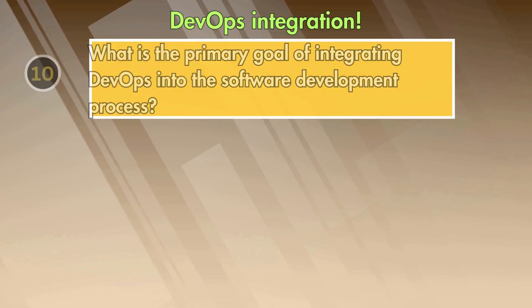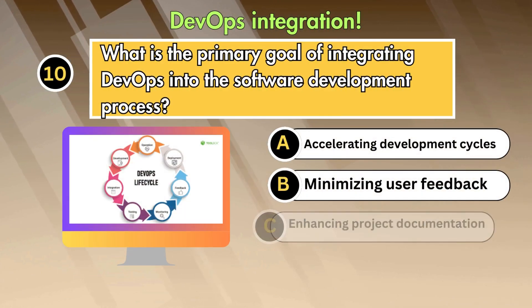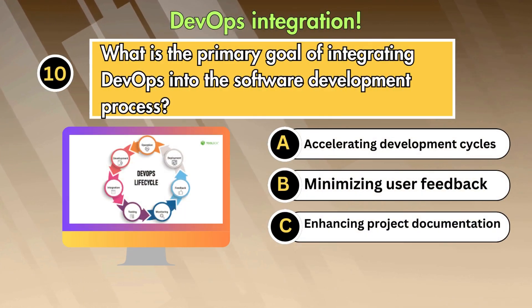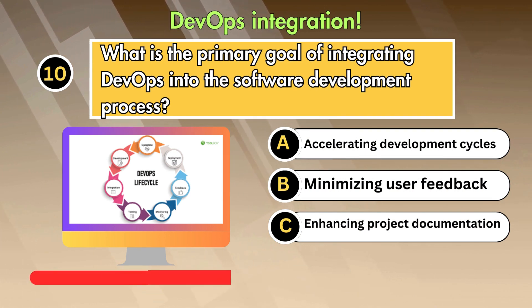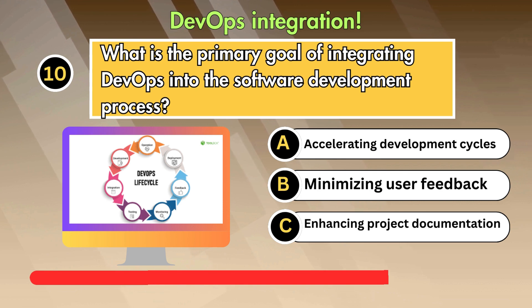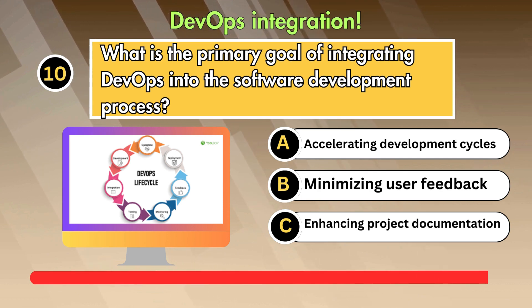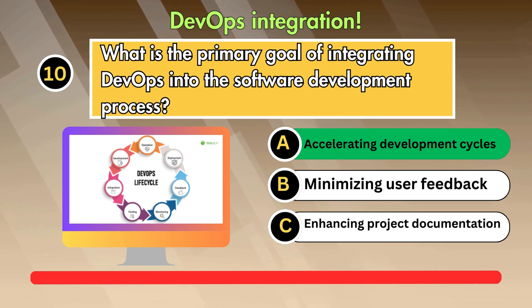Question 10: What is the primary goal of integrating DevOps into the software development process? Answer is: Accelerating development cycles.